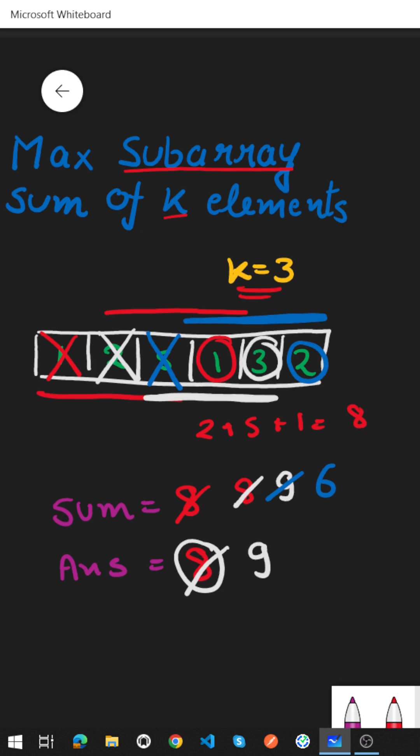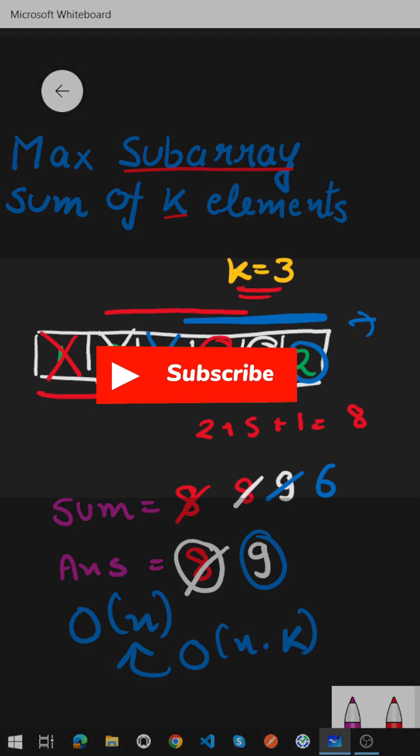Now we don't have any element towards the right. So this is the end of our array. So final answer that we got for the maximum subarray of k elements is 9. So this is how we solve this problem with the help of sliding window and since we are iterating every element at most once the time complexity becomes O(n).